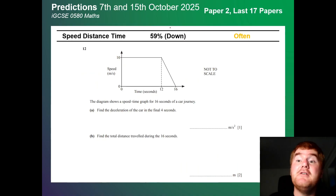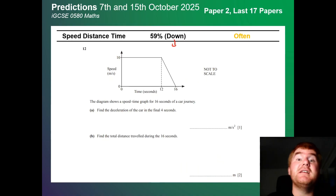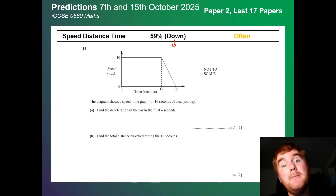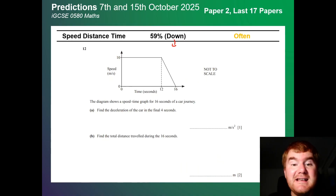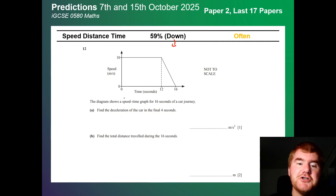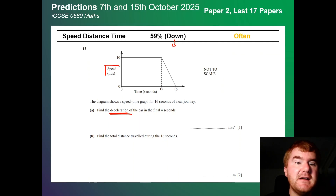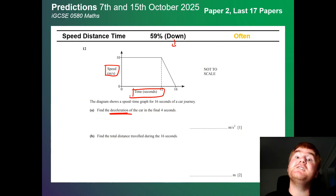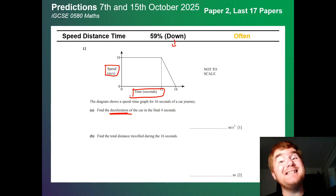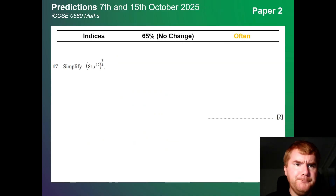Speed, distance, time is down at 59%, so it's probably going to appear more on Paper 4 these days. Remember the words deceleration and acceleration, particularly for a speed-time graph. Make sure you revise both distance-time and speed-time graphs.